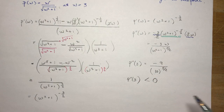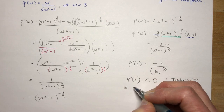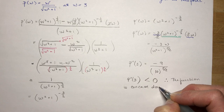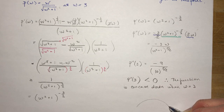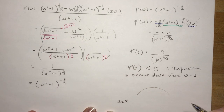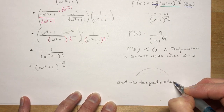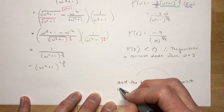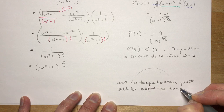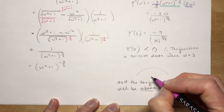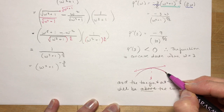If it's less than zero, that means the function is concave down when w = 3. So it'll be shaped something like this — and that means the tangent at this point will be above the curve. So if w = 3 is somewhere here, the tangent is up here — you're under the concave-down part of the function. That was the little thing that showed up in homework question number four.